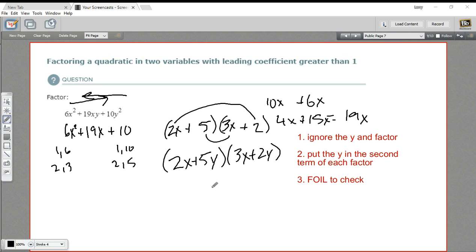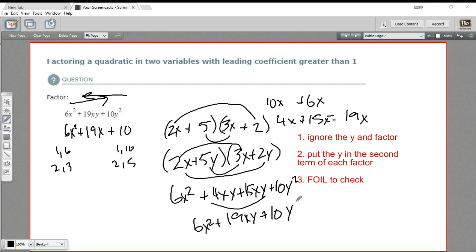Now we should foil this out just to check. So first terms, 2x times 3x is 6x squared. The outside terms, 2x times 2y is 4xy. Inside terms, 5y times 3x is 15xy. And the last terms, 5y times 2y would be 10y squared. This in the middle, we've already verified, comes up to 19xy. So we've got 6x squared plus 19xy plus 10y squared.